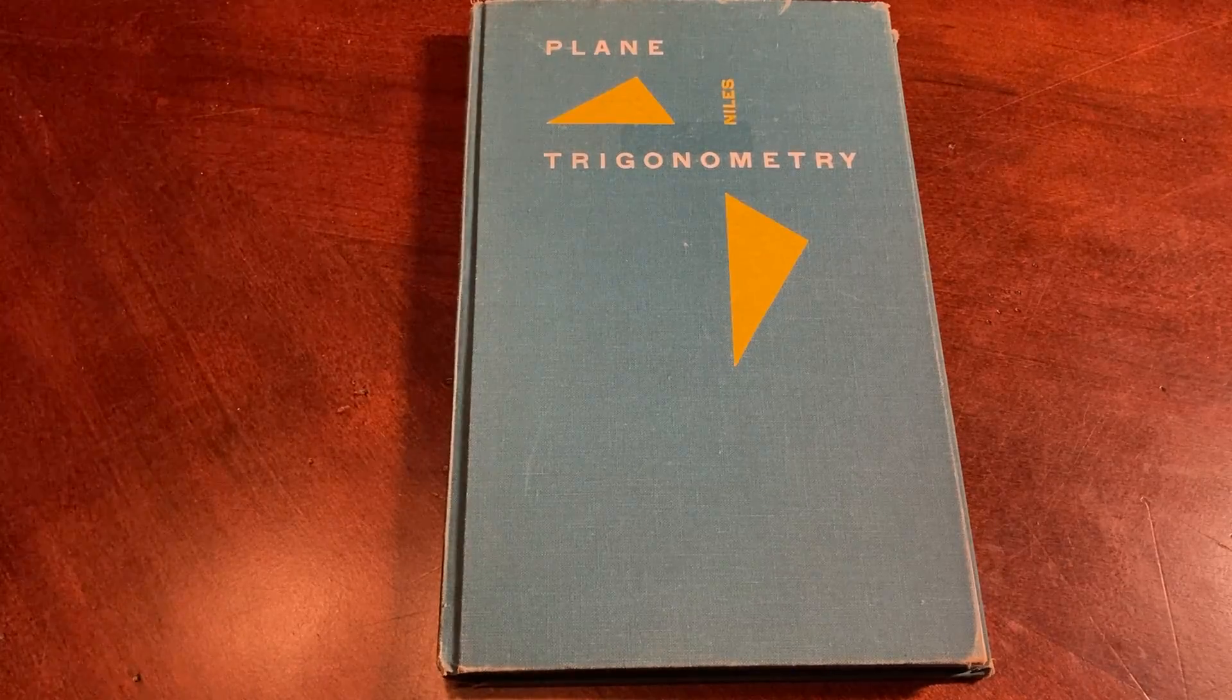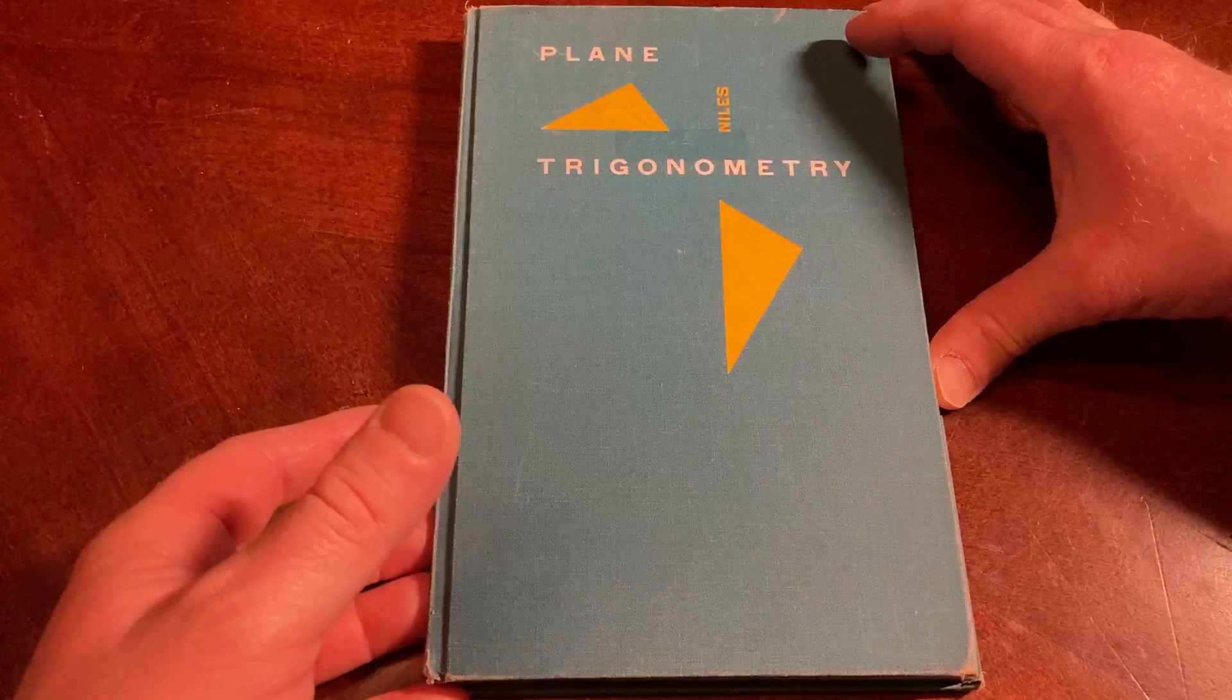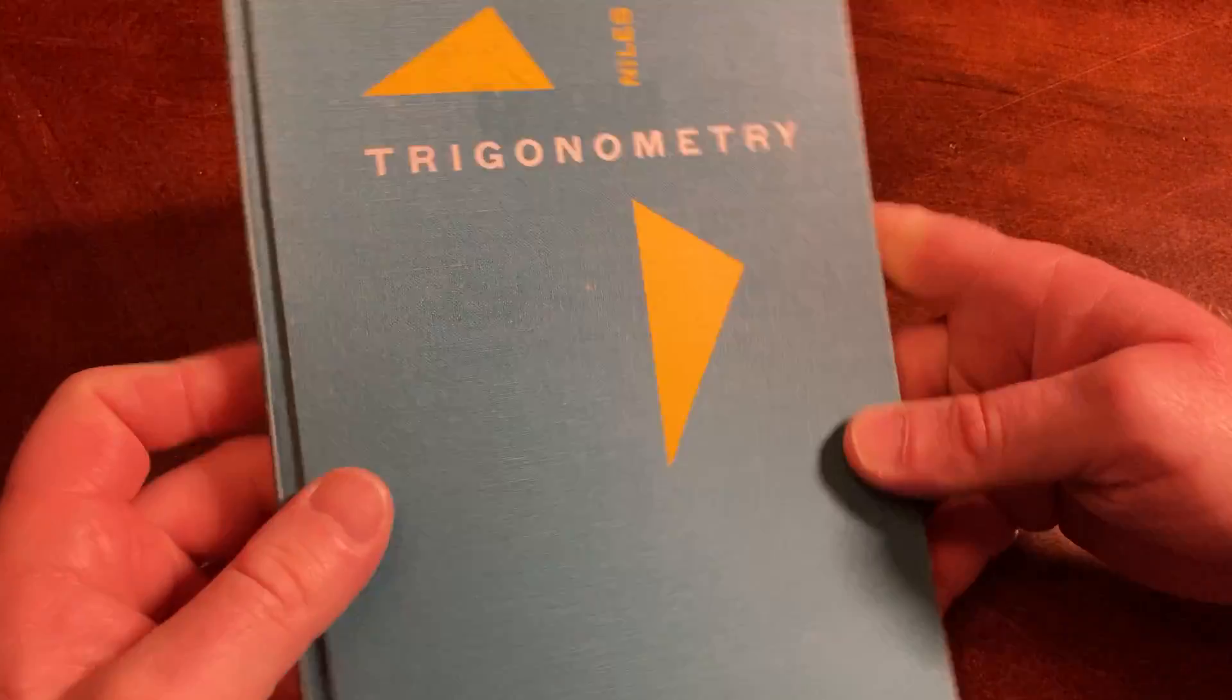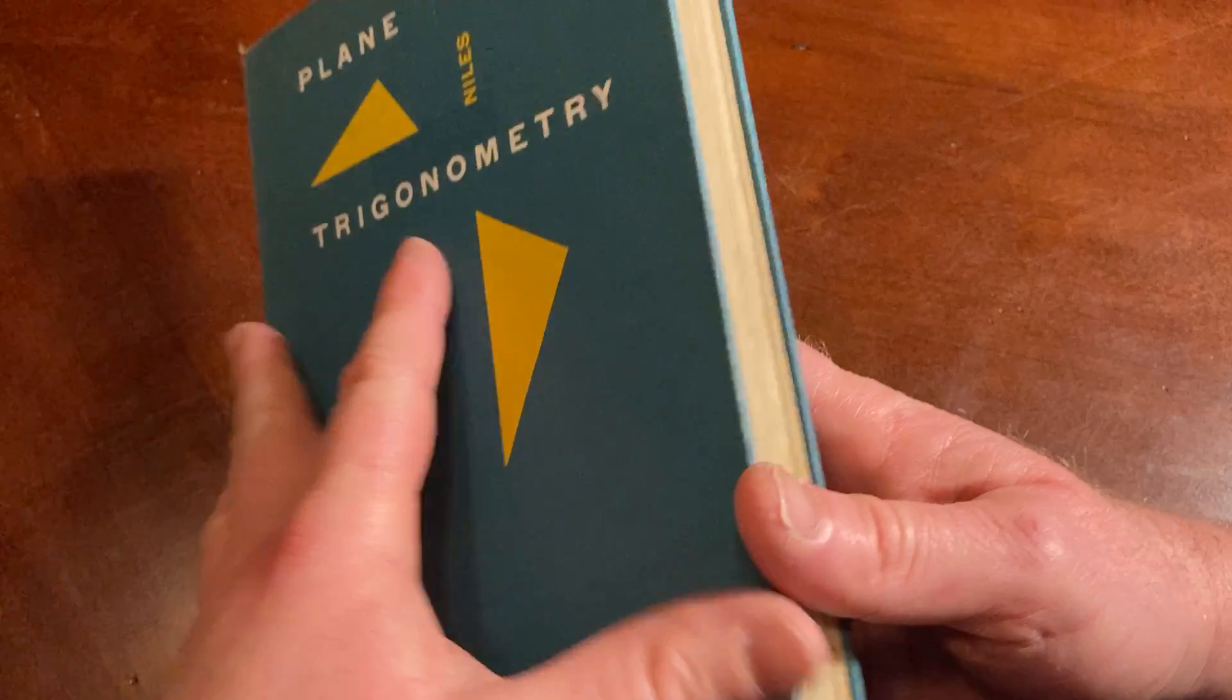Hello there. In this video, we are going to look at this book. It's called Plane Trigonometry. It's by Niles, and this is an old book. It's pretty old. Let's open it up and just take a look inside it and see what we find.